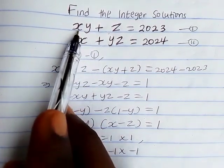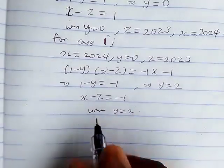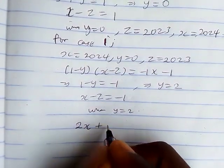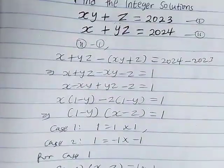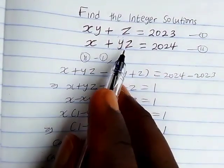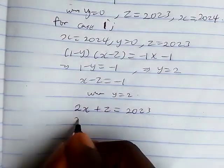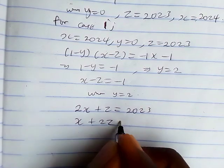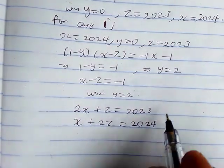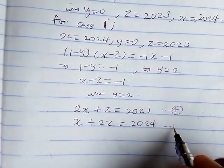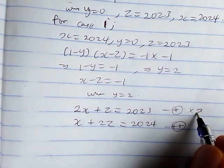When y equals 2 in equation 1, we get 2x plus z equals 2023. When y equals 2 in equation 2, we get x plus 2z equals 2024. Let's solve these simultaneously using the elimination method.